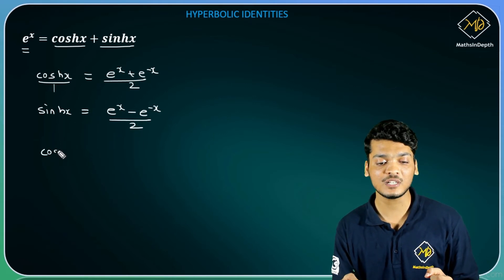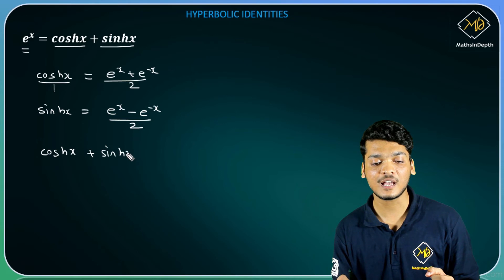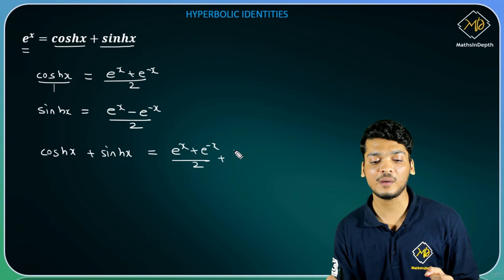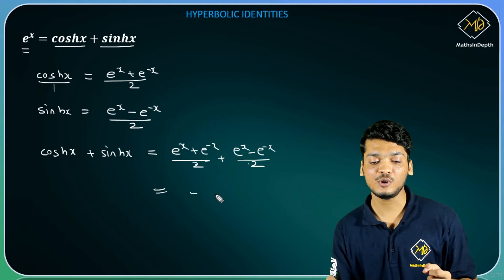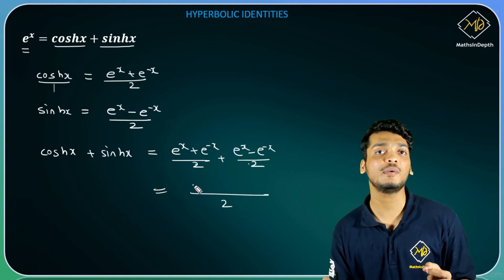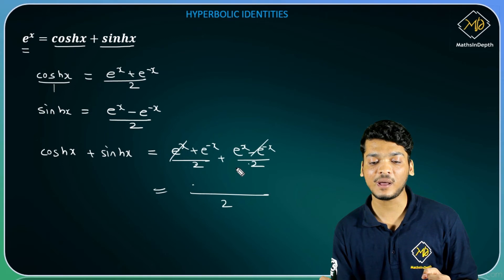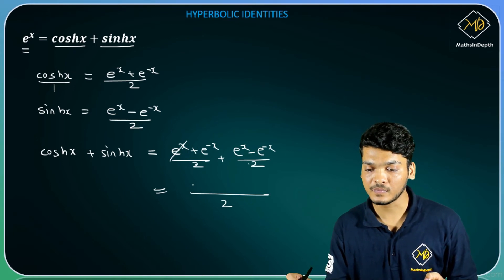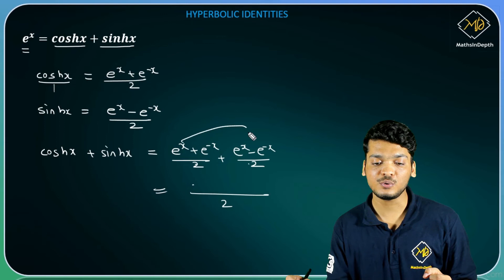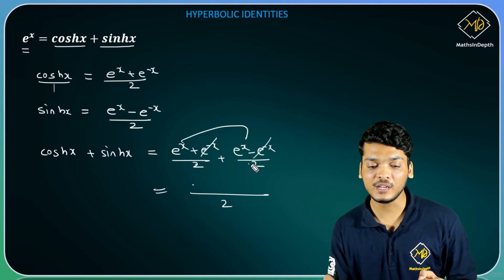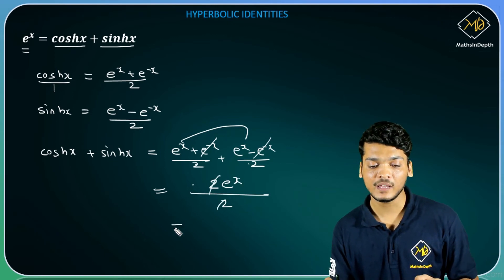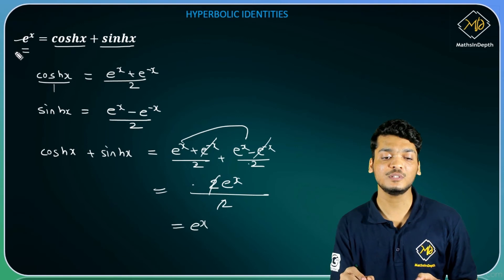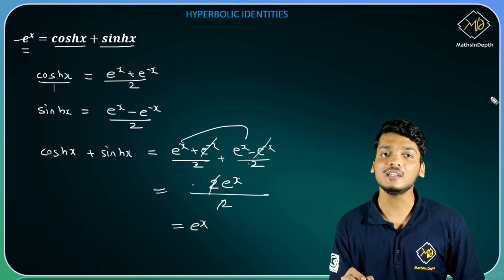Let's add these two equations. Then I will get cosh(x) plus sinh(x) is equal to (e raise to x plus e raise to minus x divided by 2) plus (e raise to x minus e raise to minus x divided by 2). The denominators are the same, so combining: e raise to x and e raise to x add ho jayega, aur e raise to minus x cancel ho jayega. Then I will get twice of e raise to x in numerator, and the 2 cancels — finally milta hai e raise to x, aur yahi mujhe show karna tha.